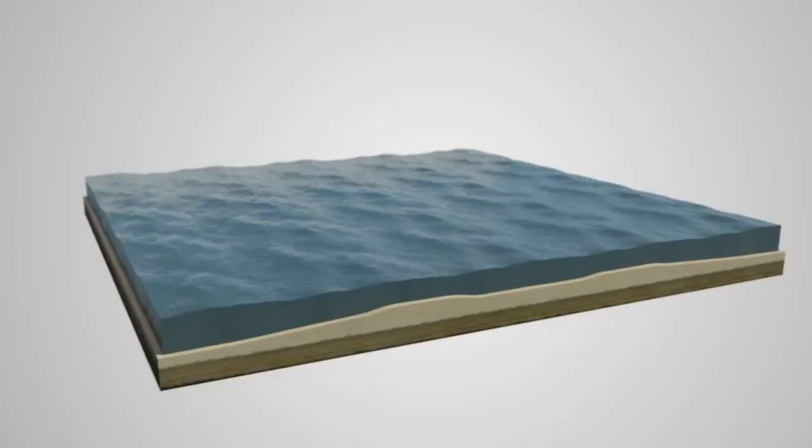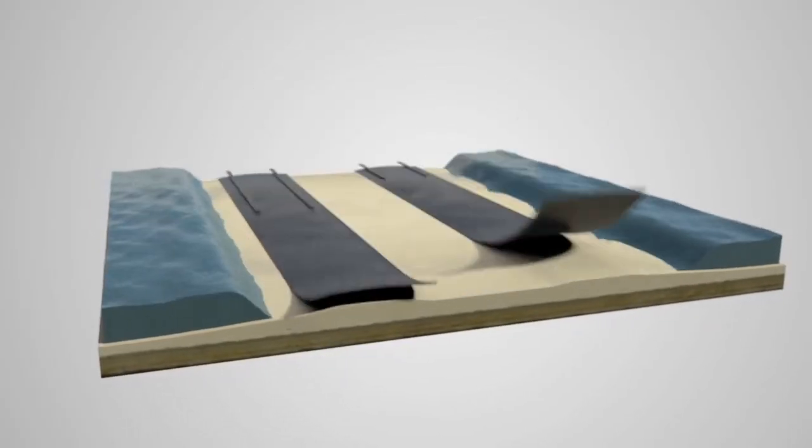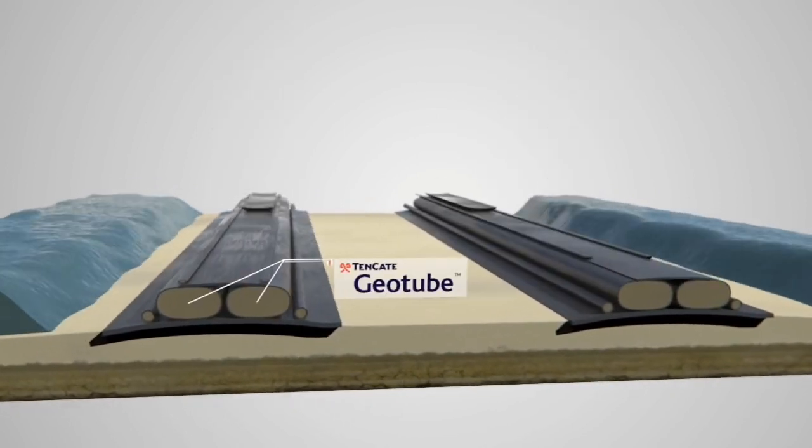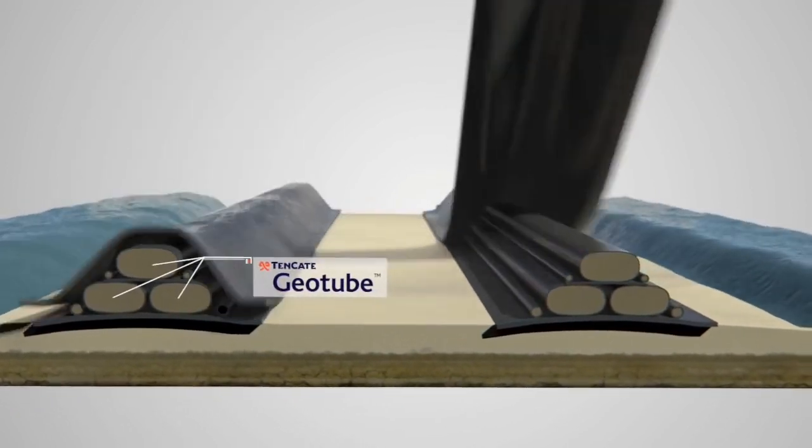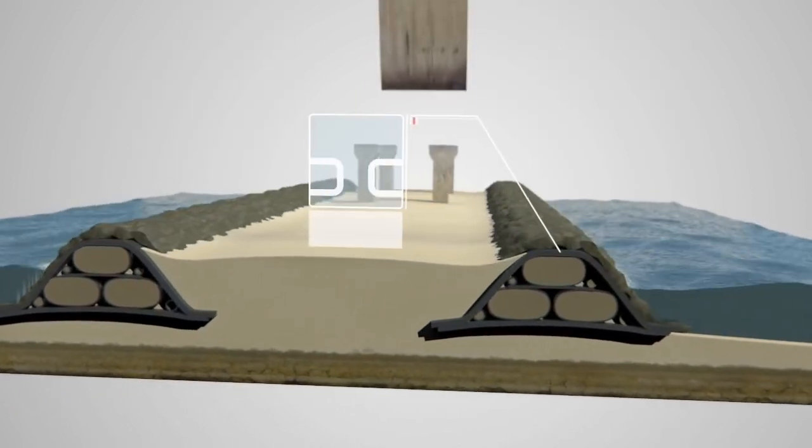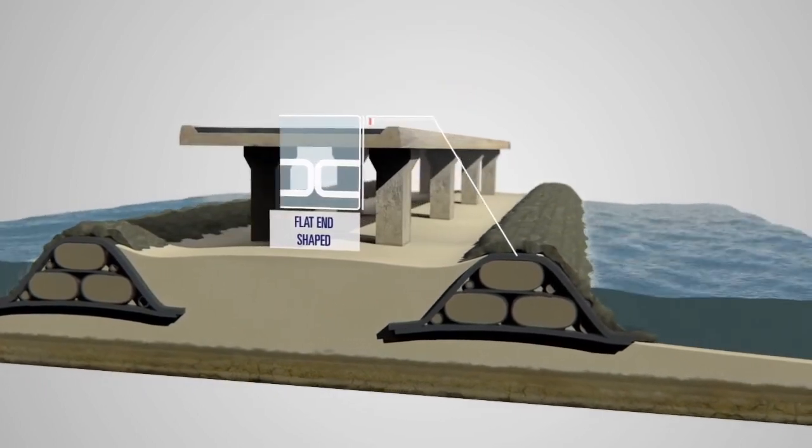A working platform constructed with Tenkata Geotube systems provides an effective base for a bridge to be built, as the platforms allow continuation of construction during high tide and under all weather conditions.